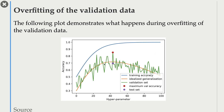This orange curve is our idealized generalization curve. We will have underfitting somewhere on the left, overfitting on the right, and a sweet spot somewhere in the middle. But instead of this idealized generalization curve, when we carry out cross-validation and plot cross-validation results for different hyperparameter values, we get these green spikes. These green spikes are not at all smooth — they seem to be very sensitive to changes in the hyperparameter values.